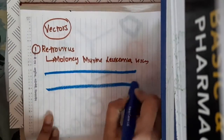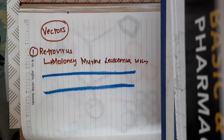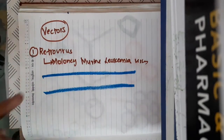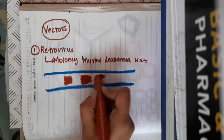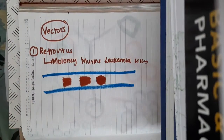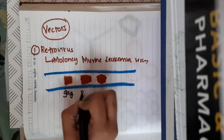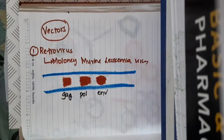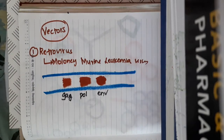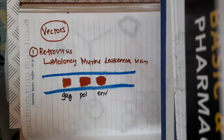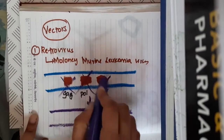The retrovirus has RNA, so this is the retrovirus RNA with genes which are responsible for its pathogenicity. These genes are gag, pol, and env genes, and they are responsible for the pathogenicity. What we do is remove these gag, pol, and env genes, and we insert the human genes into this RNA genome.